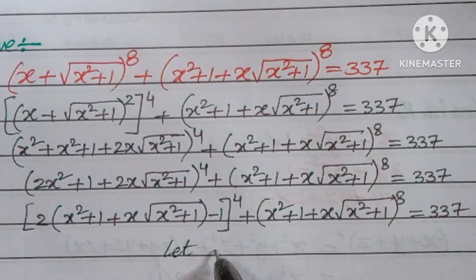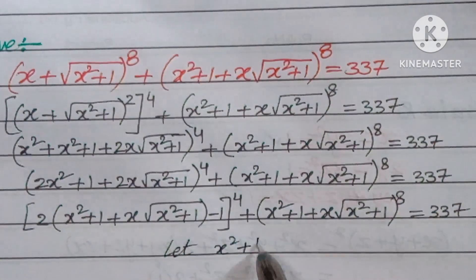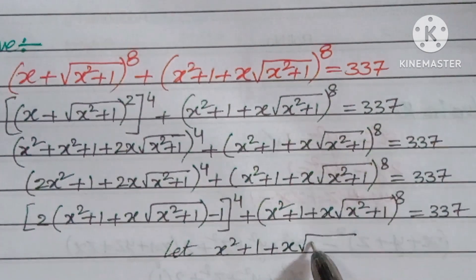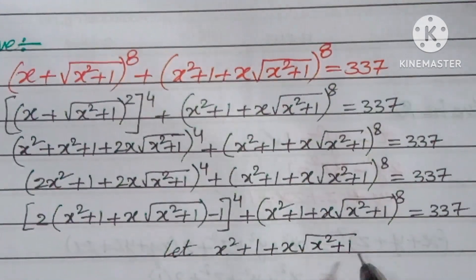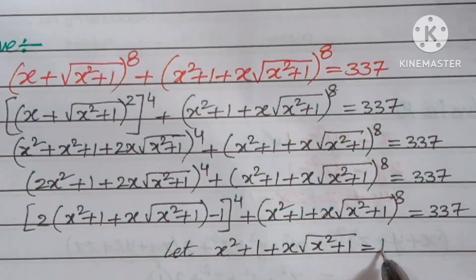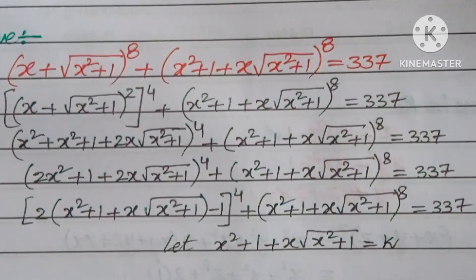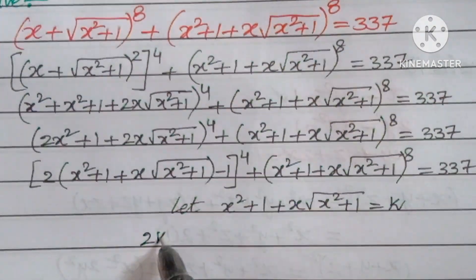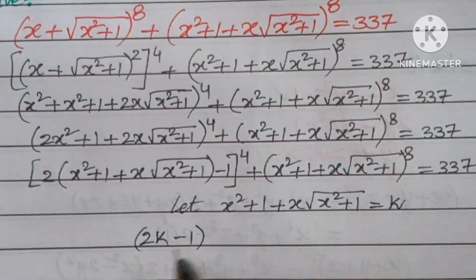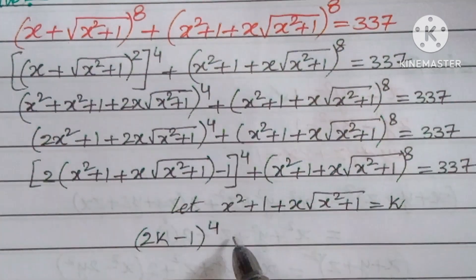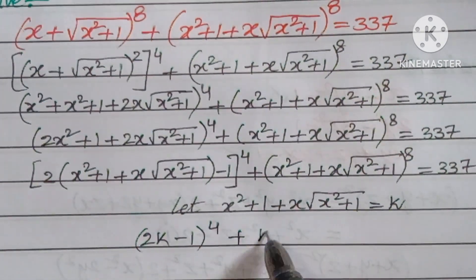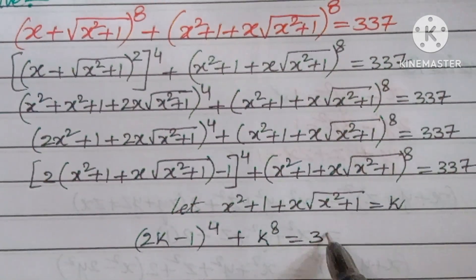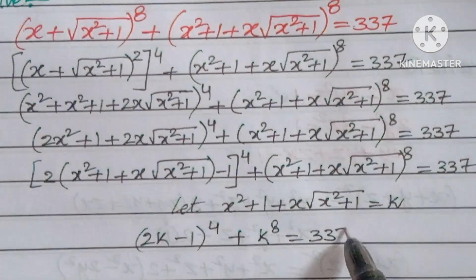Let x² + 1 + x√(x² + 1) = k. Then we get: (2k − 1)⁴ + k⁸ = 337.